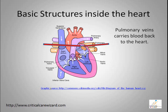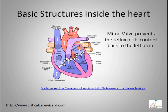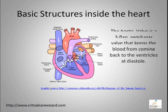After blood has been oxygenated, the pulmonary veins carry the blood back to the heart. As the pulmonary veins empty their blood contents to the left atrium, it then passes through a two-flap valve known as the mitral valve. This mitral valve prevents the reflux of its contents back to the left atrium.